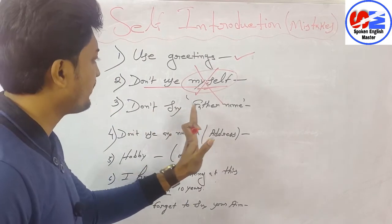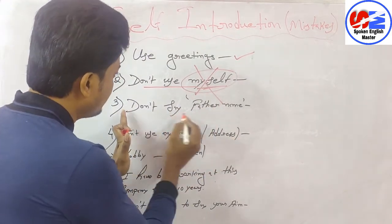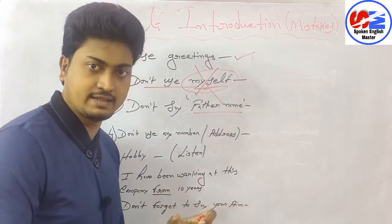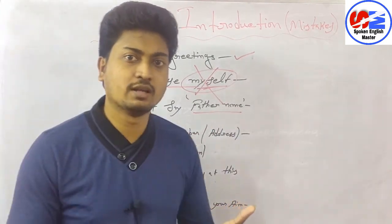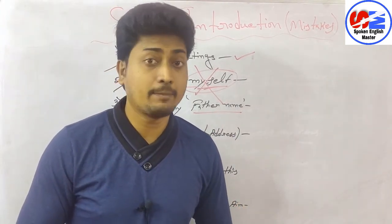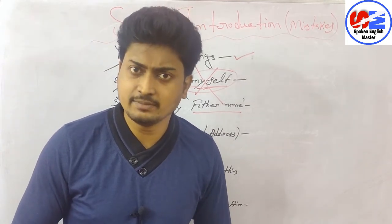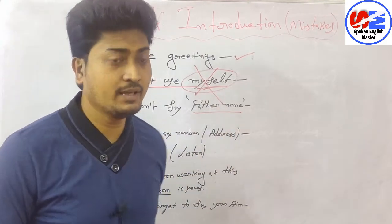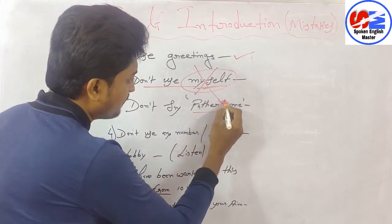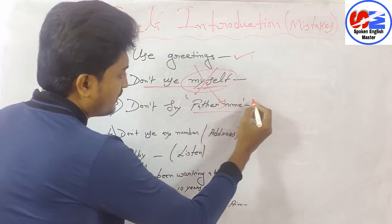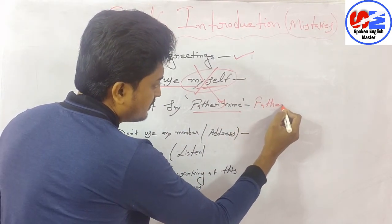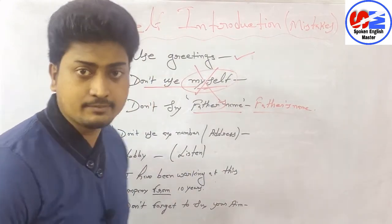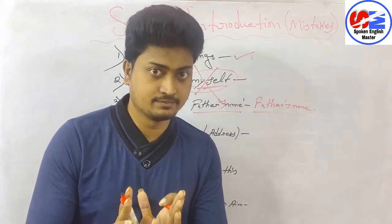Don't say 'father name.' Many people say 'my father name is this' — that is wrong. The correct form is 'father's name' with an apostrophe-s, showing possession. So always say 'my father's name is...' — not 'my father name is...'